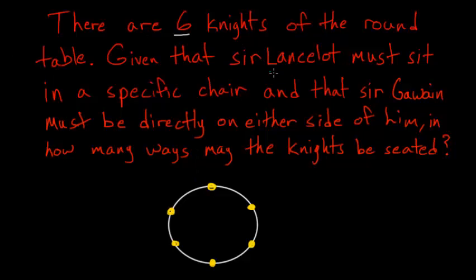We're given that Sir Lancelot must sit in a specific chair. Let's say that chair is right here, though it could be in any of these positions. Once Lancelot's in his fixed spot, then Sir Gawain must be directly on either side of him.